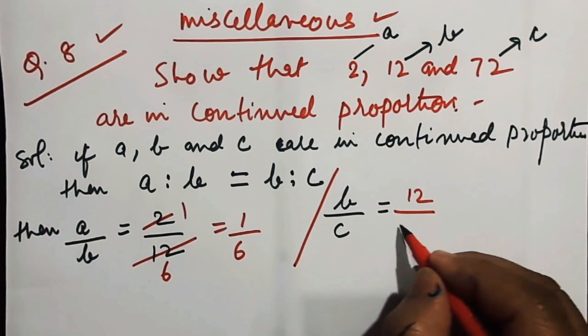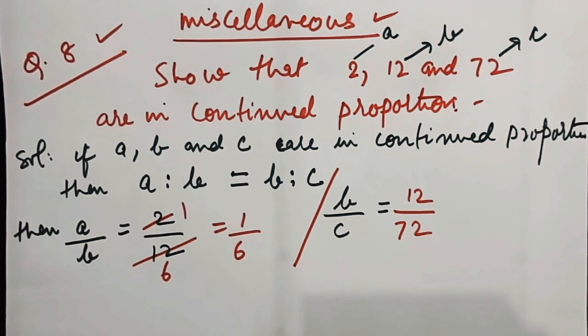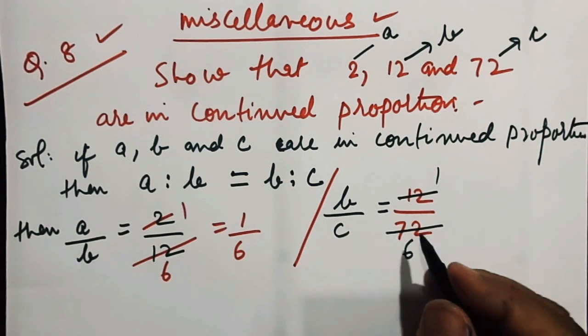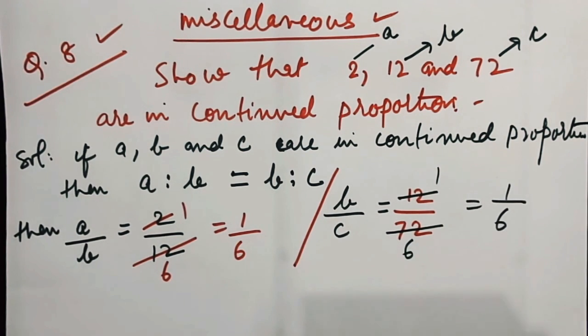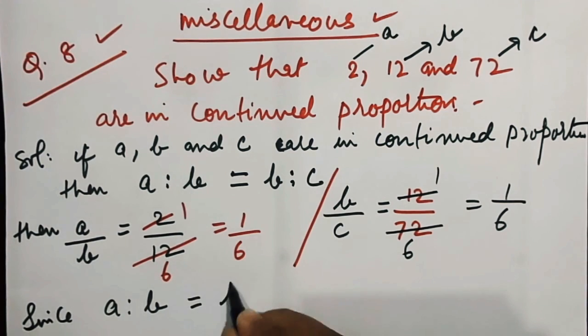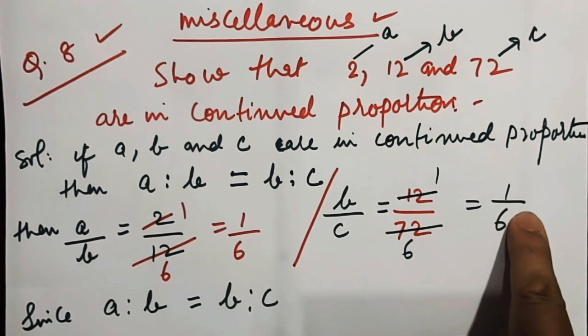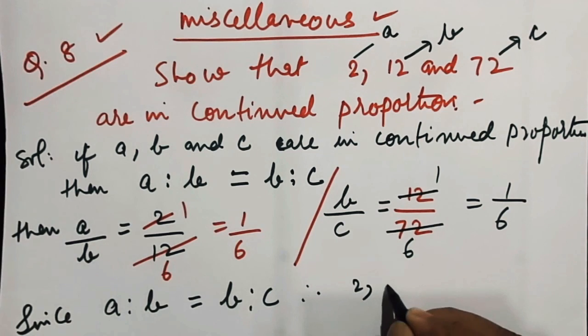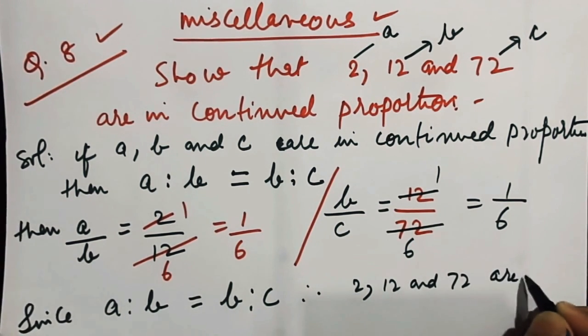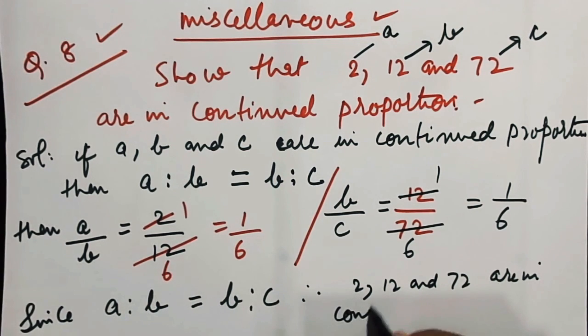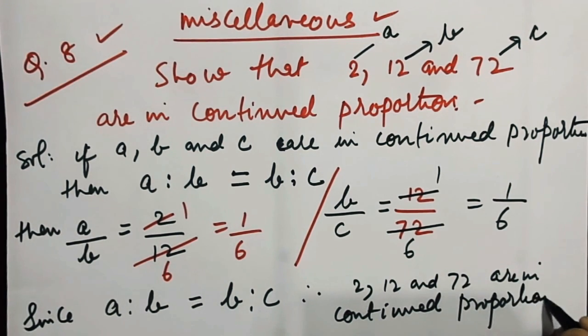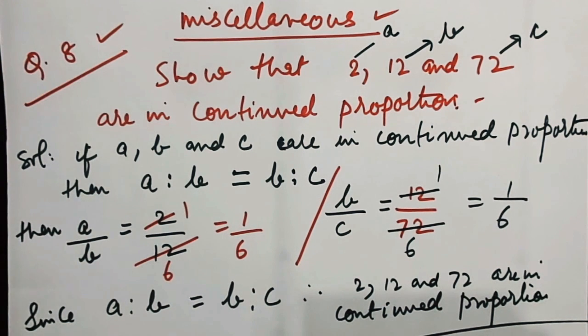And B by C will be equal to 12 by 72, and 12 one times 12 and 6 times 72, therefore B by C is equal to 1 by 6. Since A is to B is equal to B is to C, therefore 2, 12, and 72 are in continued proportion.